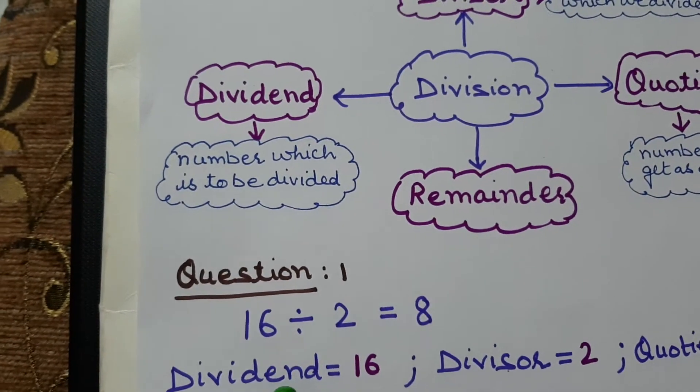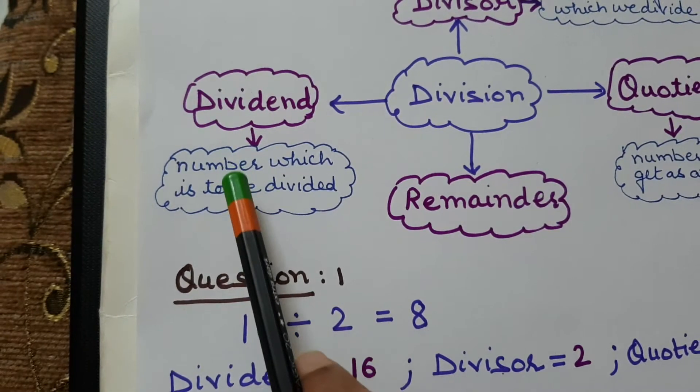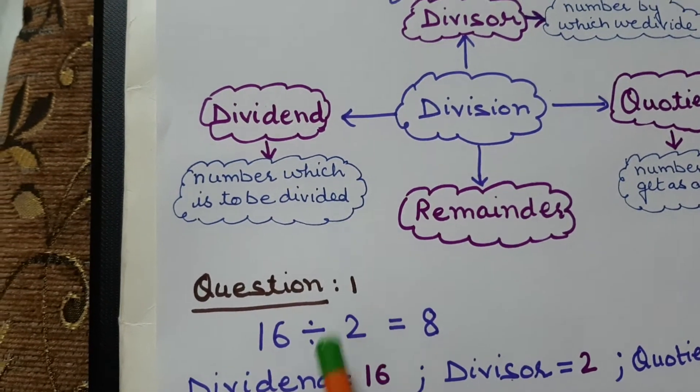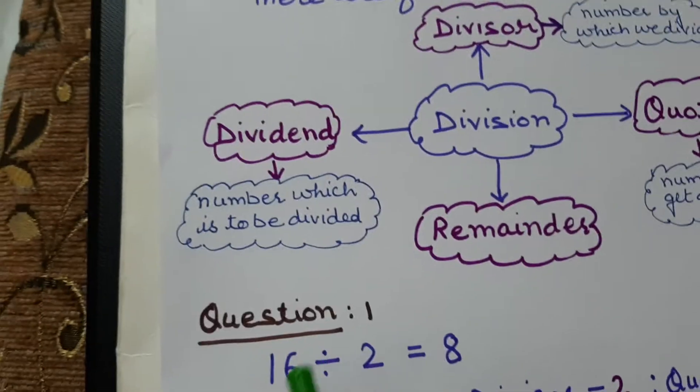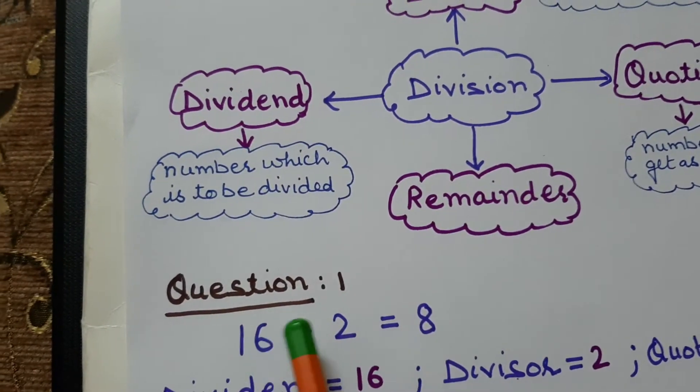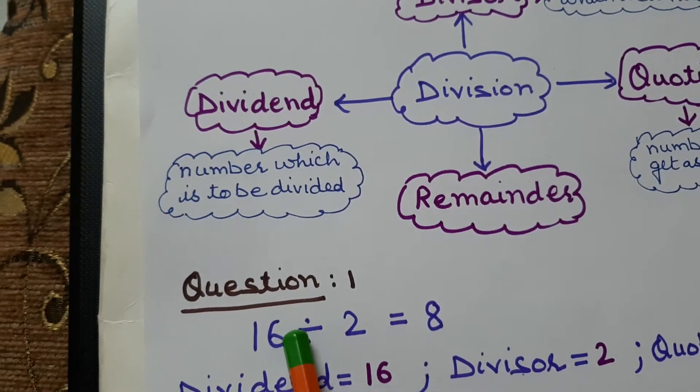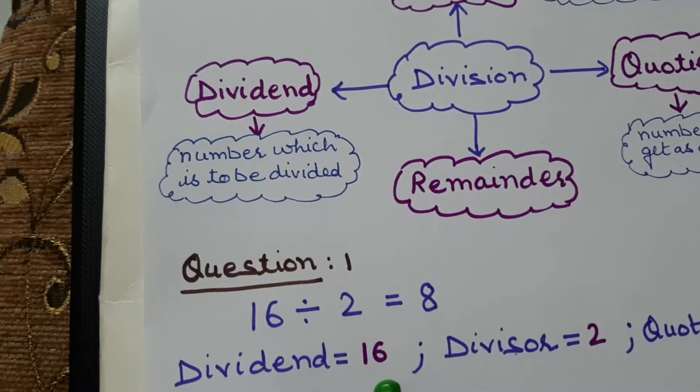Now dividend. What is dividend? Number which is to be divided. So which number is to be divided in this statement? This number? This number is divided. So this will be our dividend.